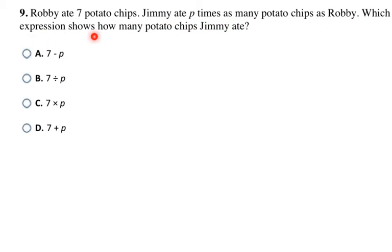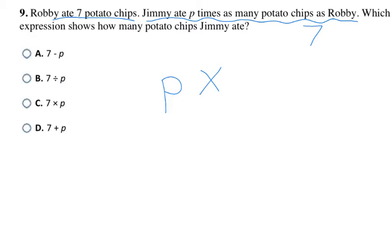Robbie ate seven potato chips; Jimmy ate p times as many potato chips as Robbie. Which expression shows how many potato chips Jimmy ate? The key is 'p times as many as Robbie' — Robbie ate 7, so that's p × 7. The keyword 'times' tells us we need multiplication, making C (7 × p) my final answer.